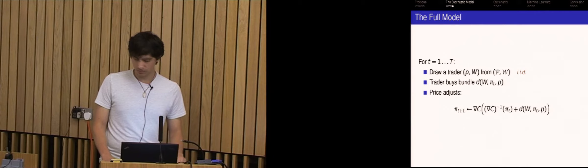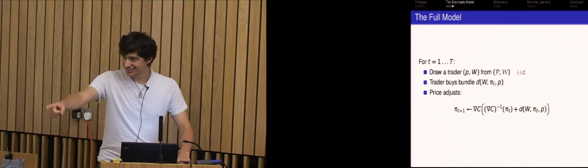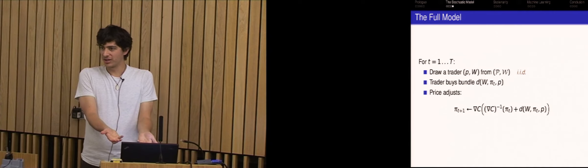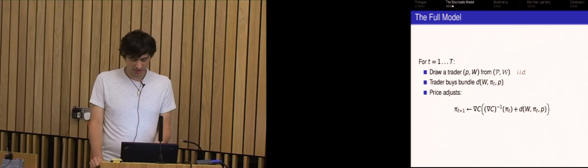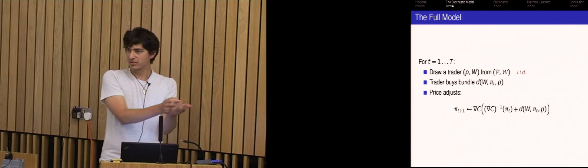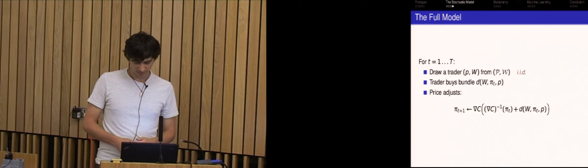So we're just going to consider wealth drawn from some distribution W. The current price is pi and the belief. So the wealth and the belief are from the trader and the prices are from the market. And again, D_i is the demand for contract i. So the full model is you draw a trader IID from your distribution, you ask them what their demand is for the current prices pi_t, and then the price adjusts according to this gloriously simple update. Basically what's going on here is you take the current prices and you ask what is the quantity vector that would have led to these prices? So that's the gradient of C inverse.